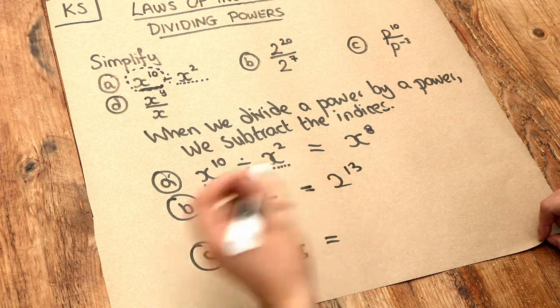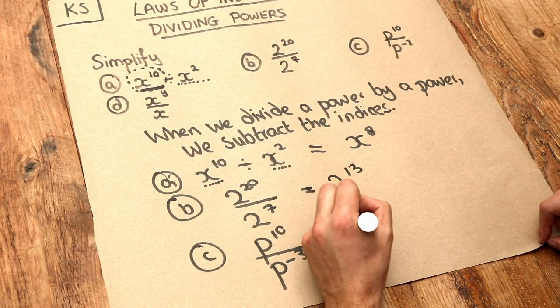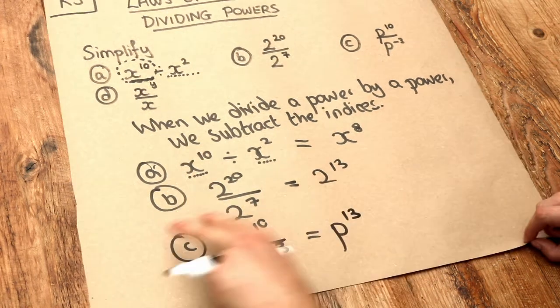So we end up doing 10 plus 3, which is 13, giving us p to the 13. That's a trick question, so be careful.